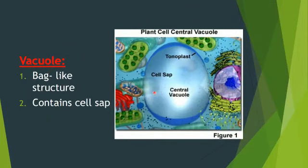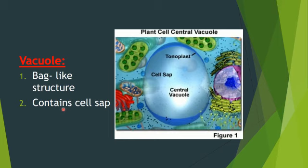On the screen you have the diagram of the vacuole. The vacuole is a bag-like structure. It is found in both plants and animals, but the main difference is that plant cells have one big vacuole while animal cells have many small vacuoles. The vacuole contains a solution called cell sap. Cell sap is a solution of sugar and water.